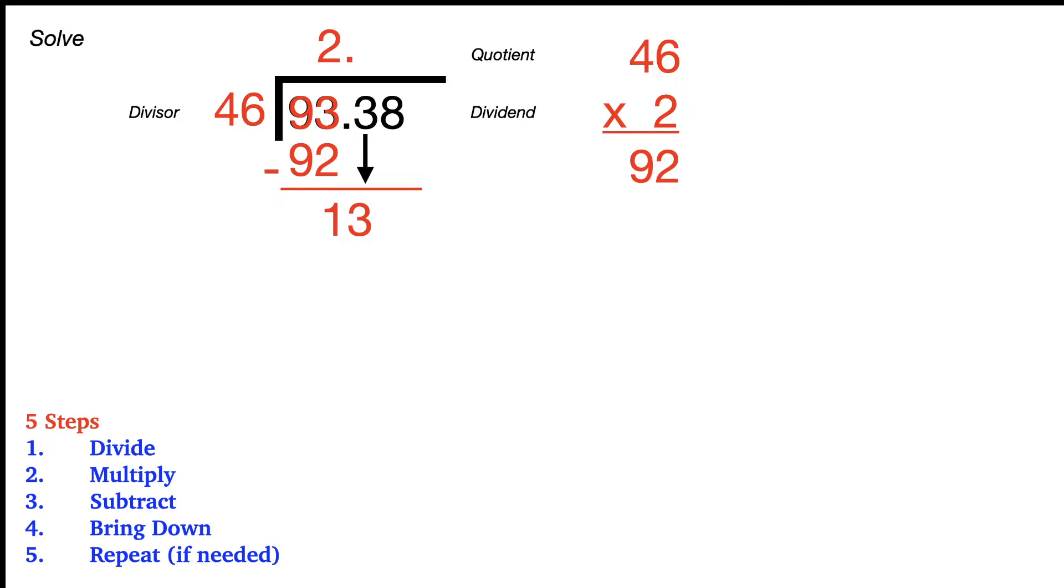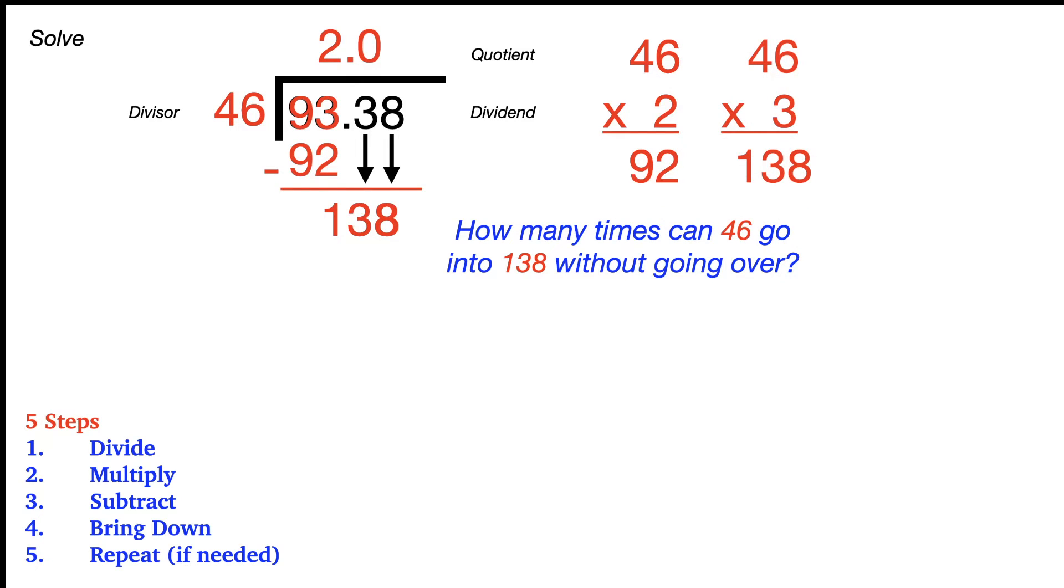So now we have 13 and we go back to the divide step. Ask yourself how many times can 46 go into 13 without going over. Well that would be zero because you can't get 46 out of 13. So because of that we're now going to go over to the next number, the 8, and bring that one down. Now we have 138. How many times can 46 go into 138 without going over? If you do your calculations that would be 46 times 3, and the 3 goes on the top in the hundredths place value, equals 138 which we write on the bottom. We subtract and we get zero which means we have no remainder and there's no more numbers to bring down. Our final answer is 2 and 3 hundredths.